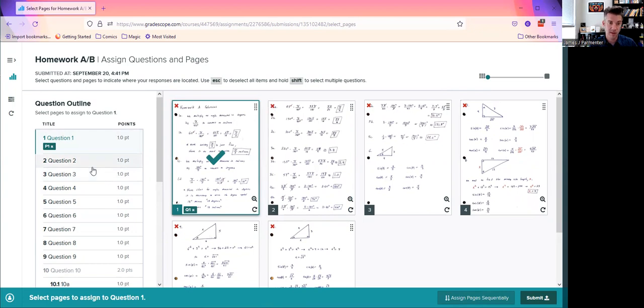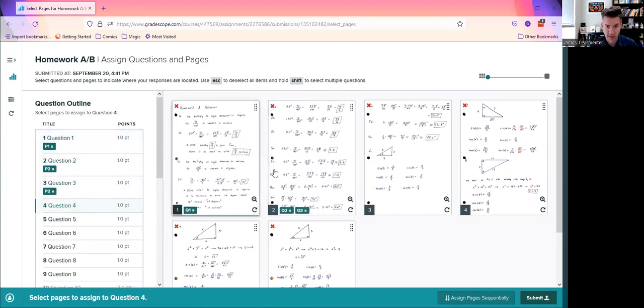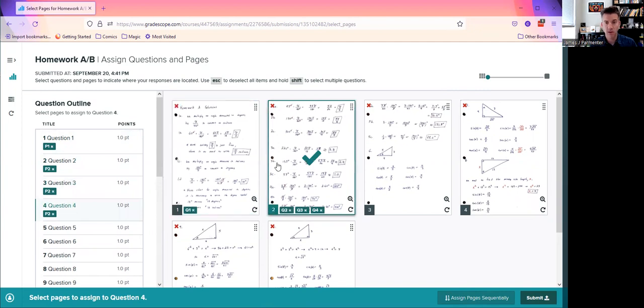So I can either do that one at a time. Click, click, click. Or now I'm going to hit escape right now because this is currently selected. And then I hit escape, unselected.